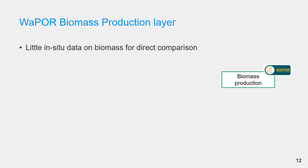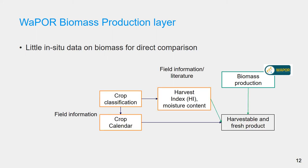The second layer we evaluated is the biomass production layer, which is derived from net primary production. There are no direct measurements for biomass production, so the layer has to be converted using information from the field to calculate the harvestable and fresh product. This information includes identification of the crop, including the location, crop calendar, and crop parameters such as harvest index and moisture content.